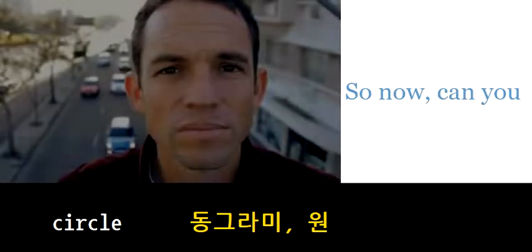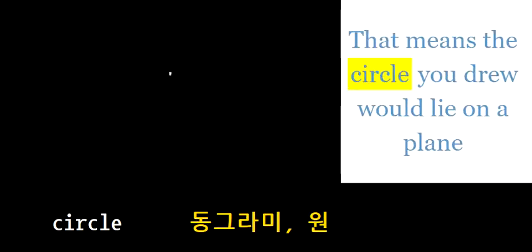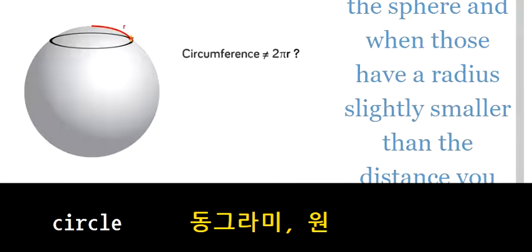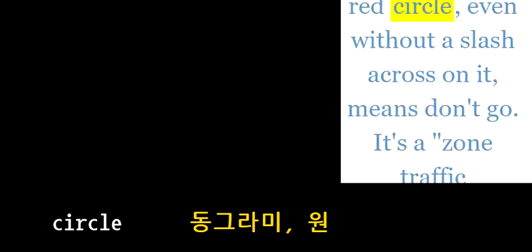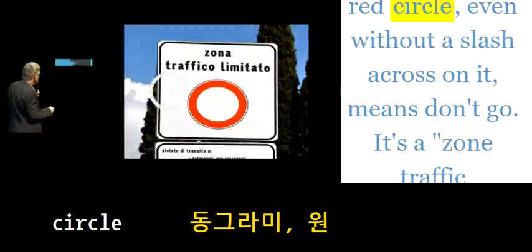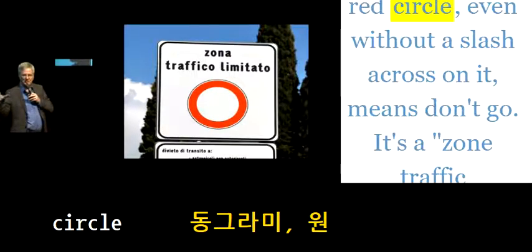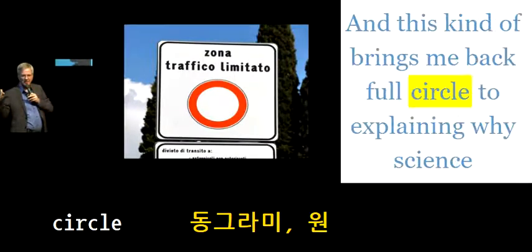So now, that means the circle you drew would lie on a plane slightly inside the sphere. And a red circle, even without a slash across it, means don't go. It says zone traffic limited.